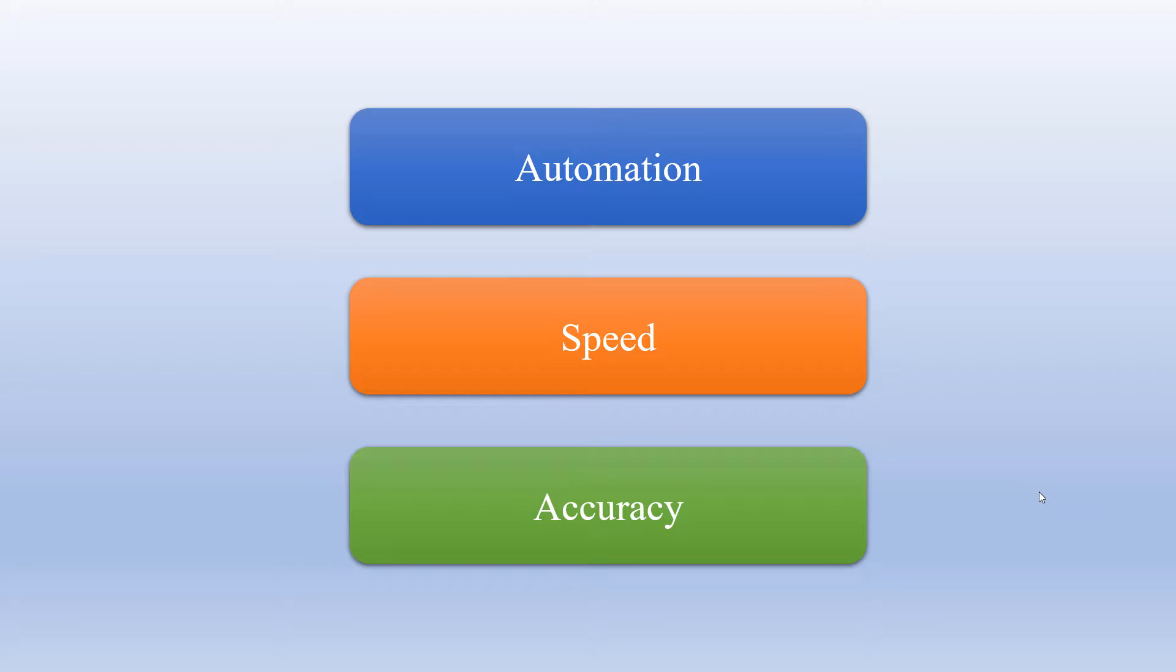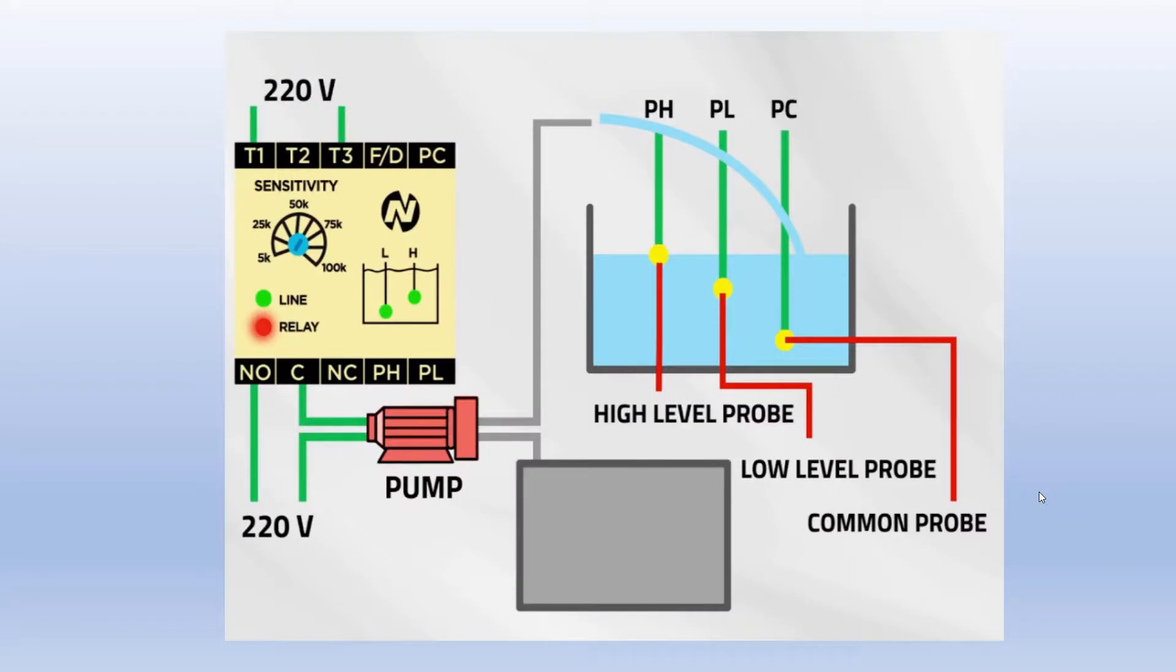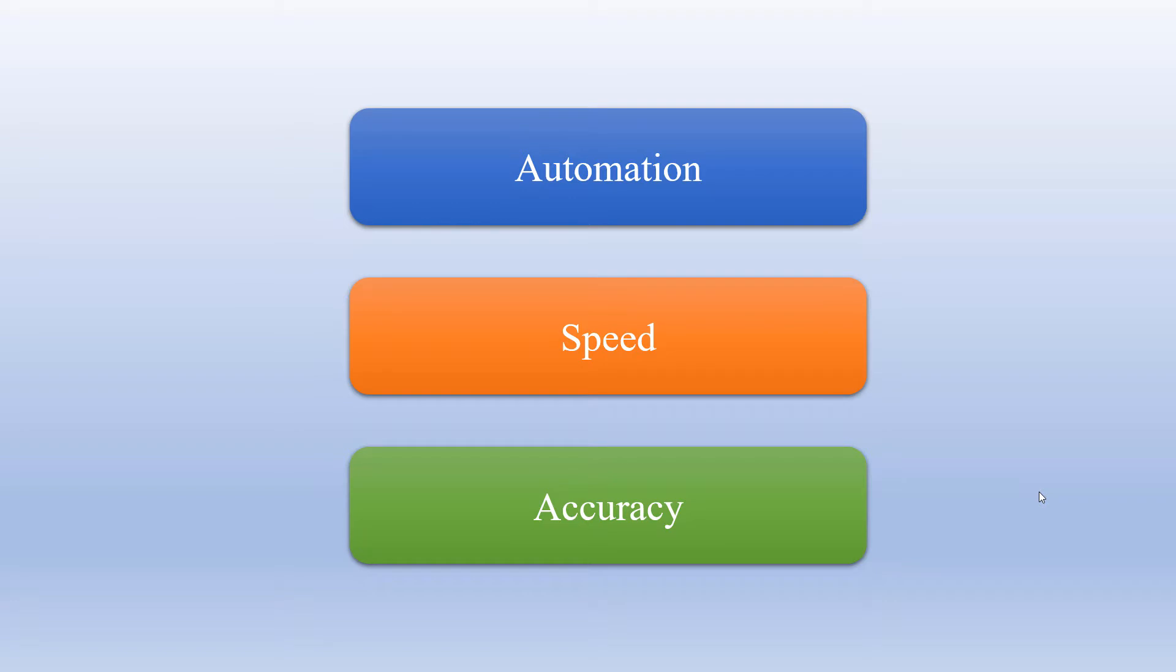It is automation, no human intervention required. You can think about an application such as automatic liquid level controllers where the level is sensed, it is compared with the set value, and then it is controlled automatically to maintain the level. So that is one example of automation where the human intervention is removed.